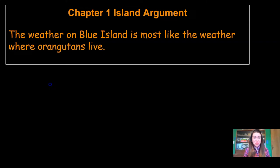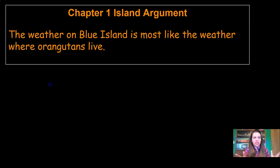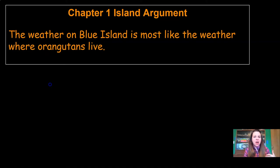So here we go. Whenever you start a scientific argument, you always want to start out with your claim first — no secrets or mysteries, just tell them what you think. So here it is: the weather on Blue Island is most like the weather where orangutans live. There you go. We've shared our claim — that's Claim B from our list. Now, if somebody was reading our argument, they may not know what the weather is like where orangutans live, so we should probably give them a little more information.